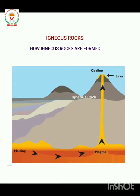This magma cools slowly and gets converted into igneous rocks. The second way of formation is when volcanoes erupt — it causes magma to rise above the Earth's surface. As you can see in the given picture, when magma comes on the ground it is called lava.